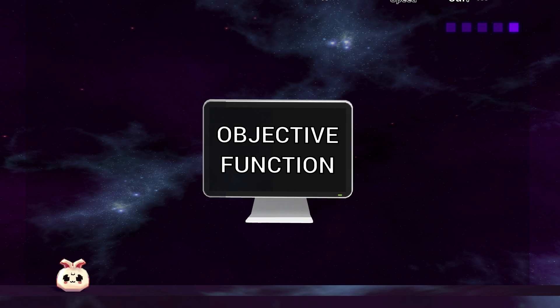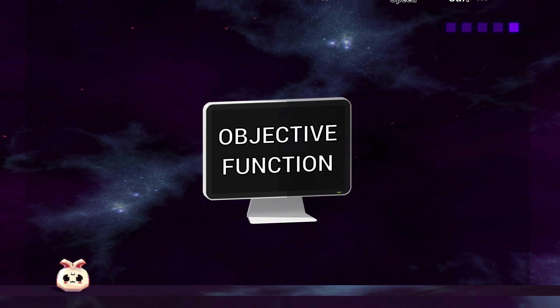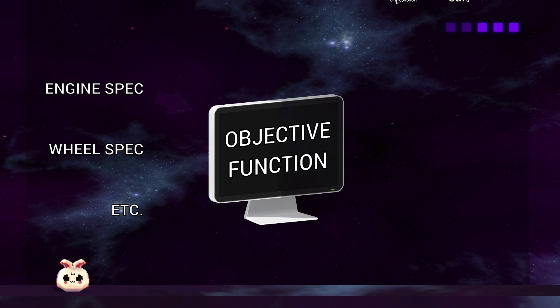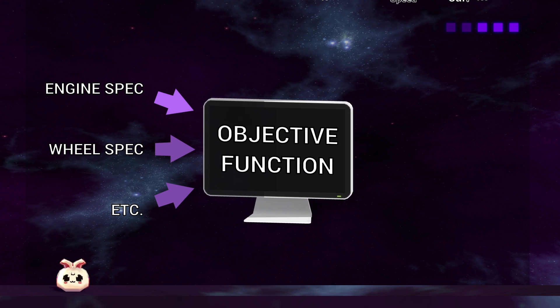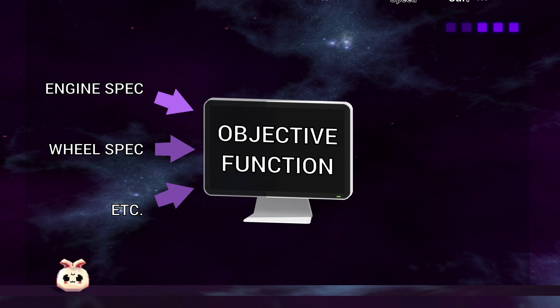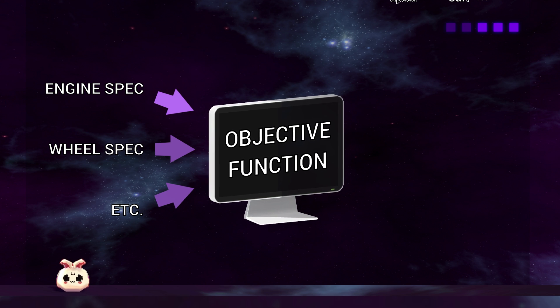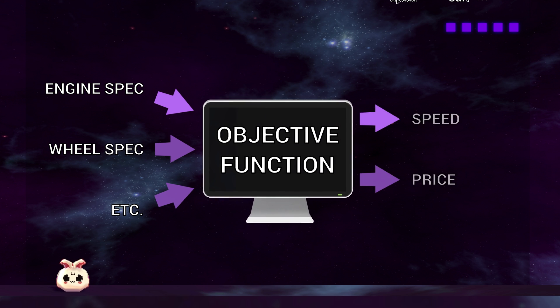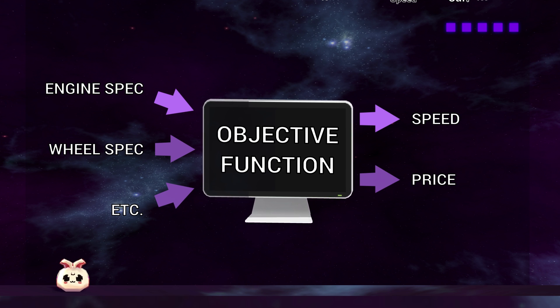The problem usually comes in the form of an objective function. You can essentially see it as a black box. You pass it design variables, which can be things like the engine specification and the wheel specification. Inside the black box is some kind of coded simulation which evaluates the car designs. Out of the black box comes our two scores: one for the speed achieved by the car design on the simulation, and one for the price of the vehicle according to some calculation.